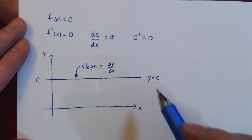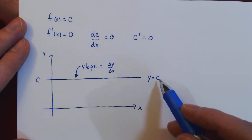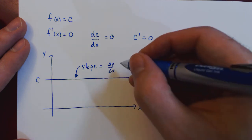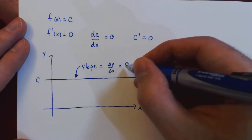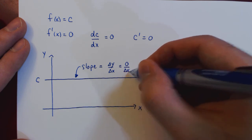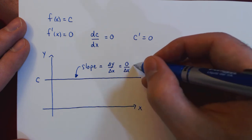But it's pretty clear here that since y is always equal to c, the change in y is always equal to zero. So no matter what the change in x is, zero over delta x is equal to zero.